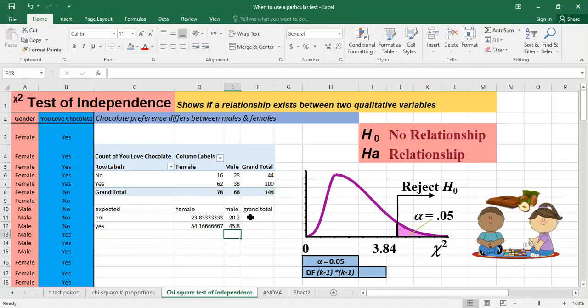So here one condition whenever you are having the chi-square test is to have it greater than 5. So as you can see the expected count in each cell is greater than 5. So we're having this condition satisfied.